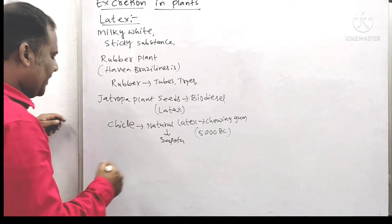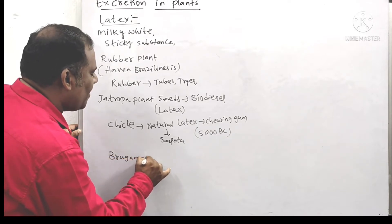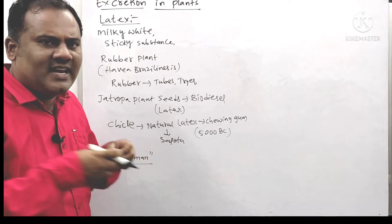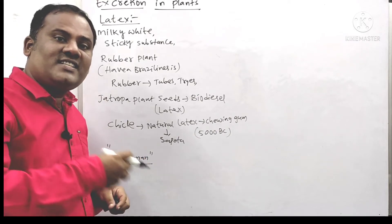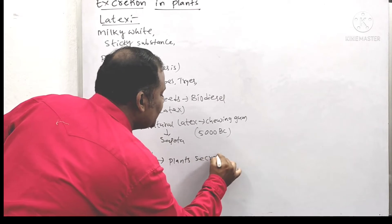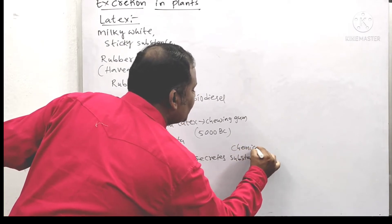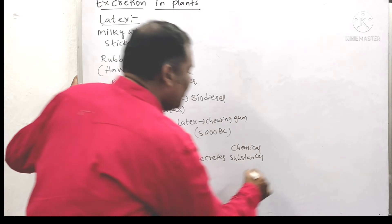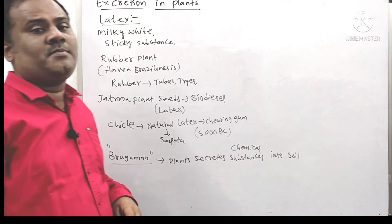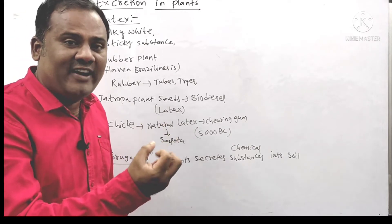Another concept to learn is Brugman's investigation. Brugman, a scientist, stated that plants do not only absorb liquids, fluids, and water from the soil, but also secrete certain chemical substances into the soil. These chemical substances can sometimes pollute the soil, decreasing its fertility.